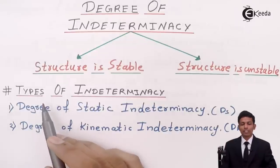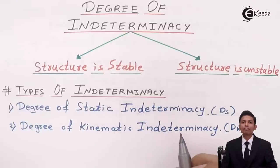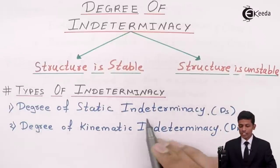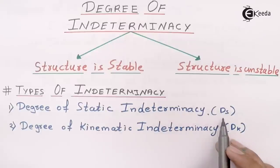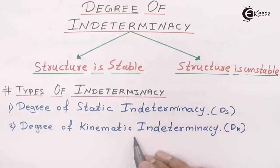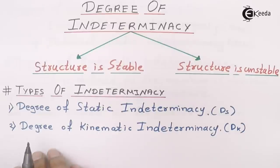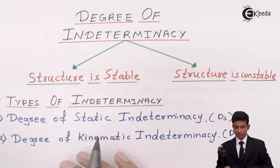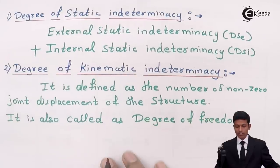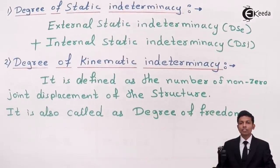Now let's move on further. There are two types of indeterminacy: the first one is degree of static indeterminacy, named DS, and the second is degree of kinematic indeterminacy, named DK. Now let's see what degree of static indeterminacy is.